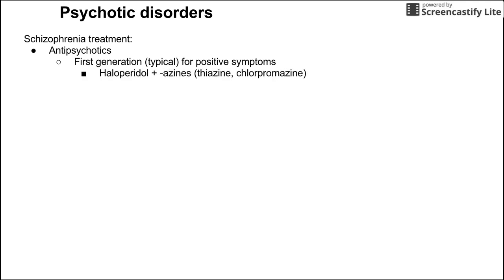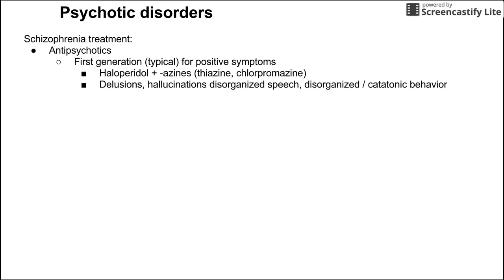Briefly touching on treatment for psychotic disorders: the first line is antipsychotics. First generation, also called typical antipsychotics, treat the positive symptoms of schizophrenia — delusions, hallucinations, disorganized speech, and disorganized or catatonic behavior. These include haloperidol and drugs ending in '-azine,' like thioridazine or chlorpromazine.